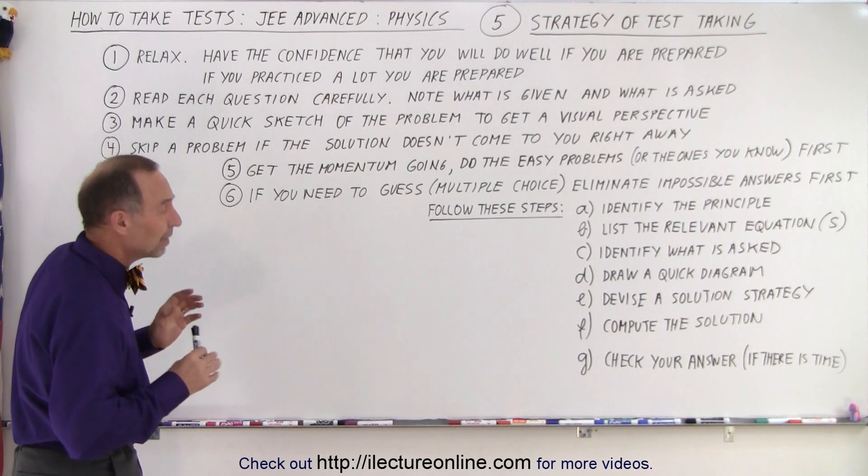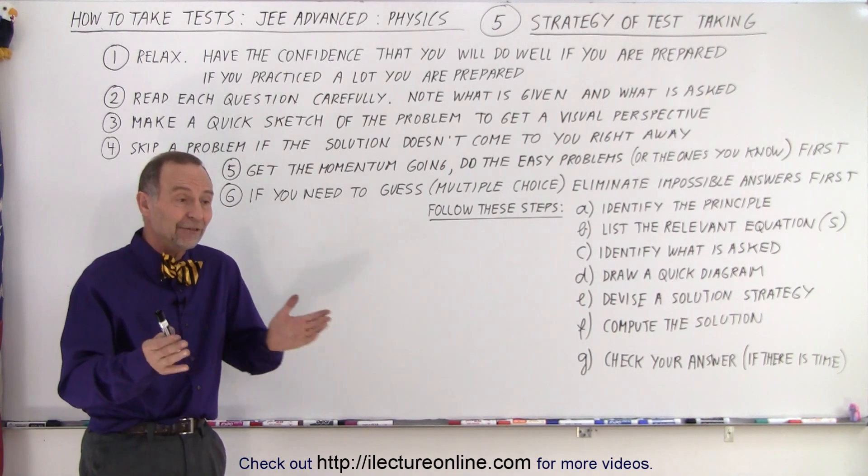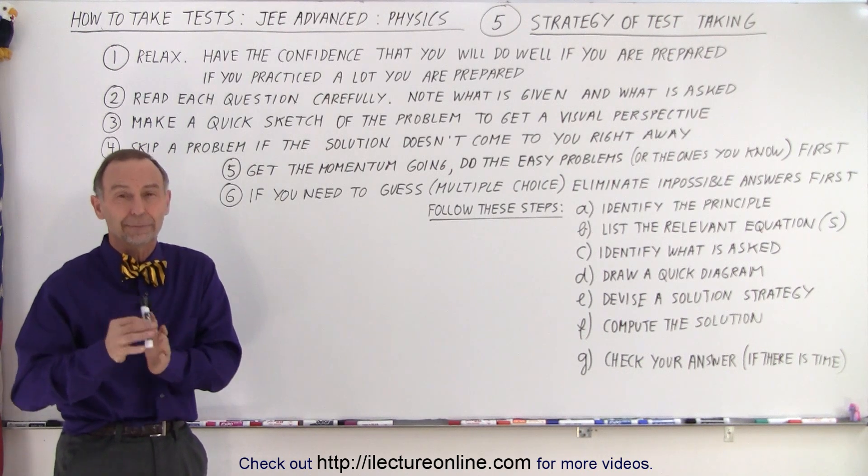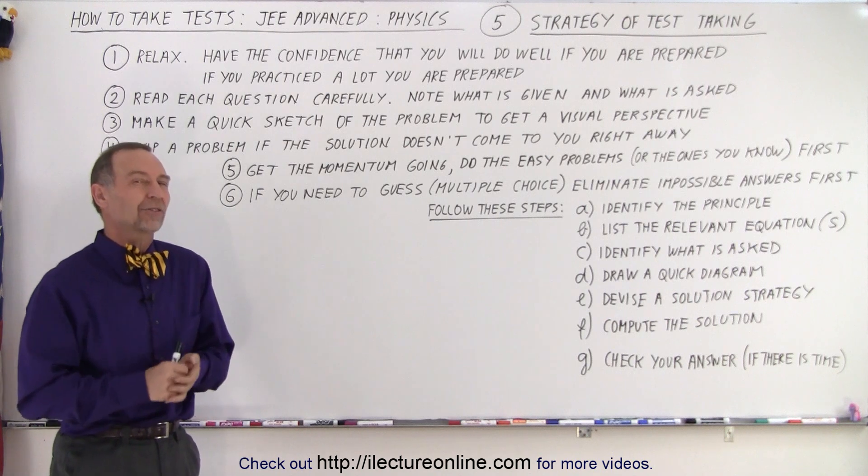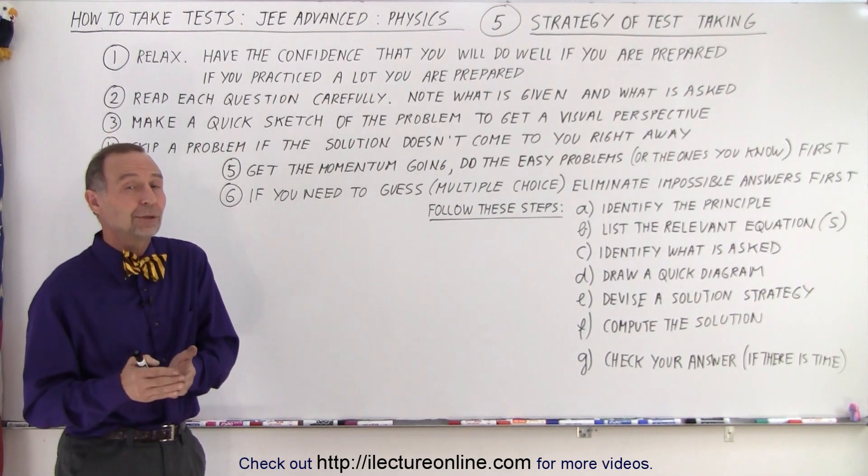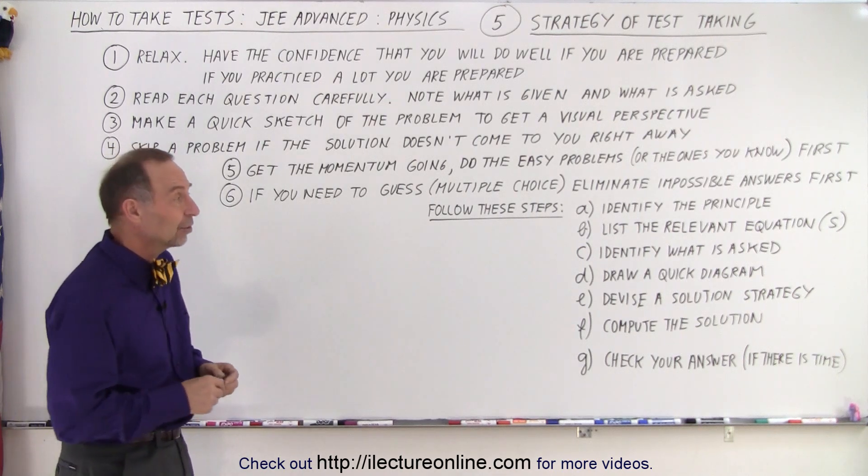And then number six here, if you need to guess, like you're taking a multiple choice test and let's say there's four possible answers, if you can eliminate one or two where you say it cannot be this one because, and there's only two left you're not sure about and you're not quite sure how to solve the problem. If you're purely guessing, I'd rather guess one out of two than one out of three or one out of four. At least have more of a chance of getting those right.